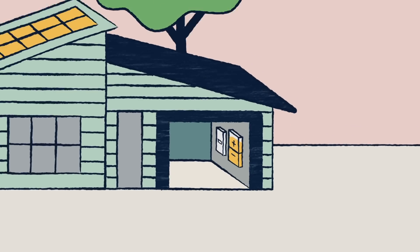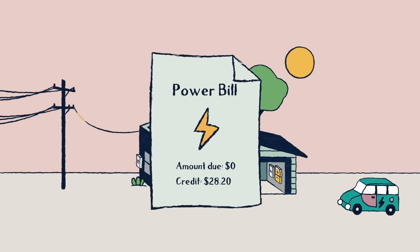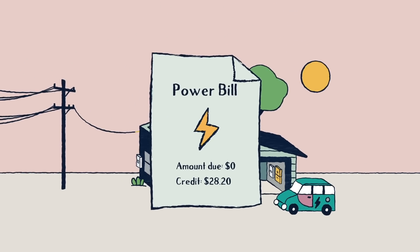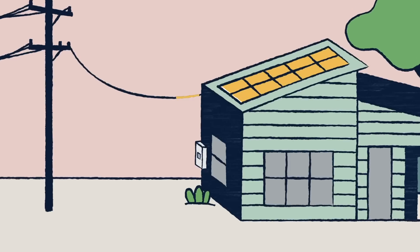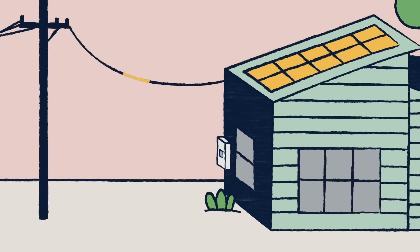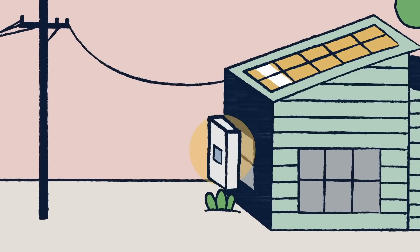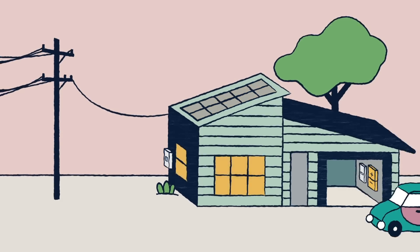And if you still produce more energy than you can use or store, then this energy also gets sold back to the grid. And to keep track of all this electricity coming in and going out, we change your meter to an import-export meter.